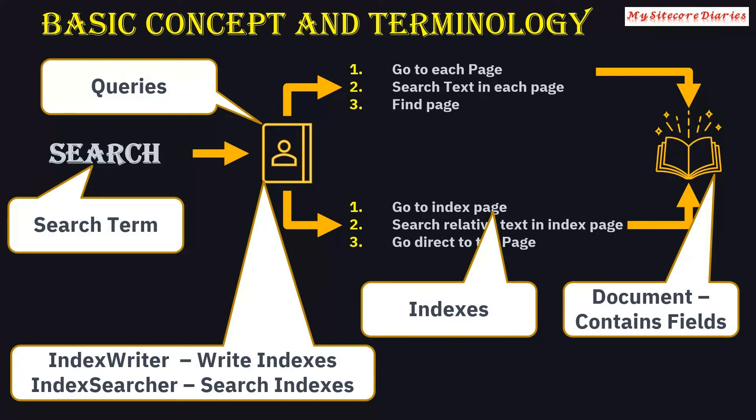So overall: you have a book where you want to search something, you go via the index page, find the page number, and go to that page. Similarly in Solr, whatever documents are stored, corresponding indexes are created. Indexing does not store all the data — it has references. Whatever you are searching is searched in the indexes, and from there you get the document. This is the basic concept of Solr.